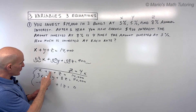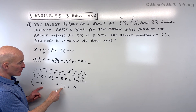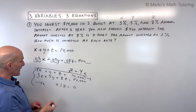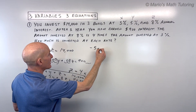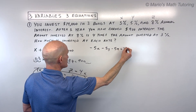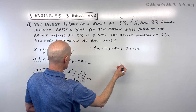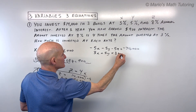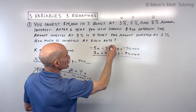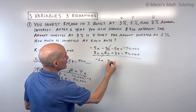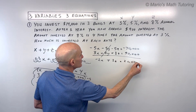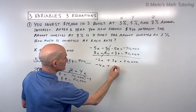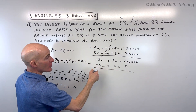To eliminate Y from the first and second equations — since there's no Y in the third — I'll multiply the first equation by negative 5, giving negative 5X minus 5Y minus 5Z equals negative 70,000. Adding to the second equation (3X plus 5Y plus 8Z equals 90,000) cancels the Ys, giving negative 2X plus 3Z equals 20,000. Combined with negative 4X plus Z equals 0, we're down to two variables and two equations.